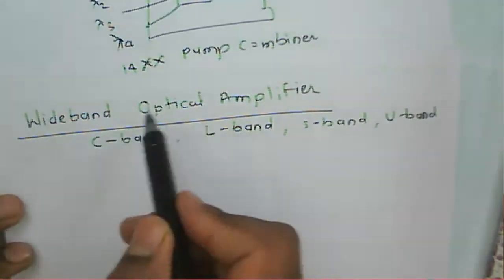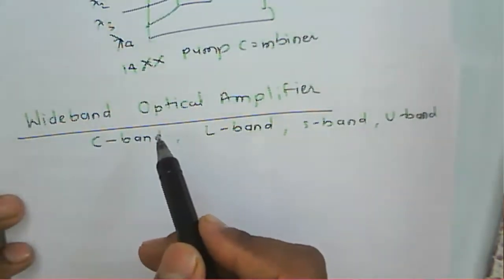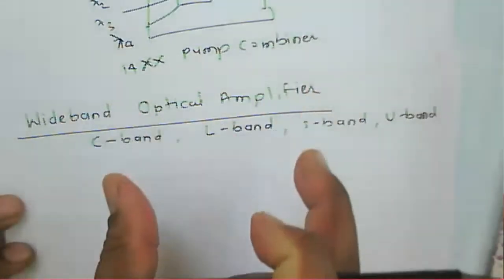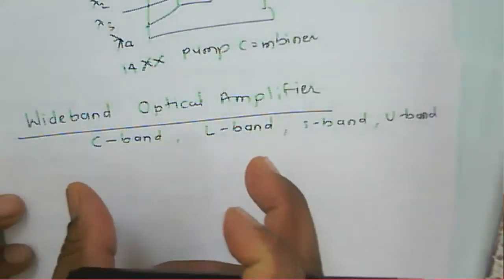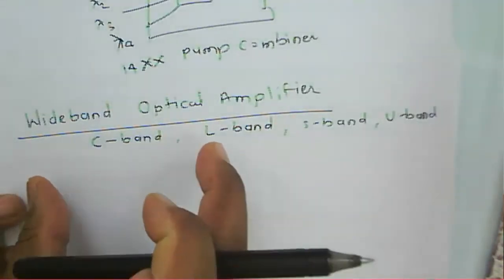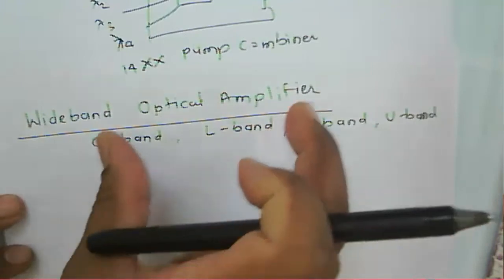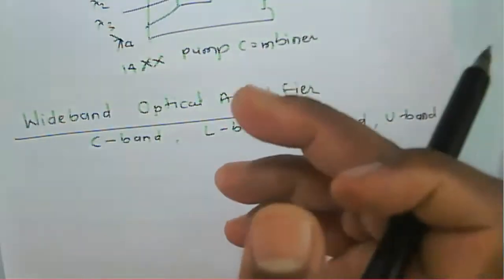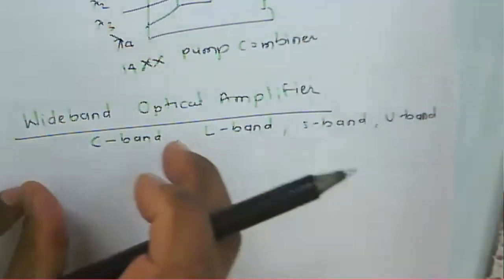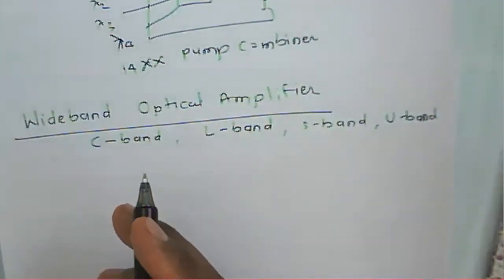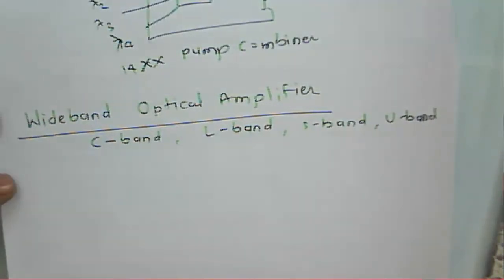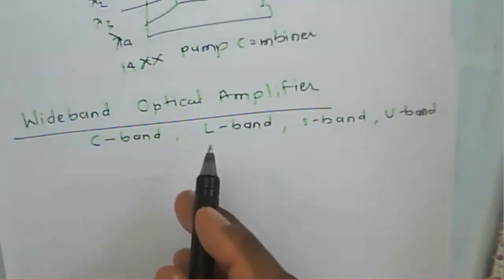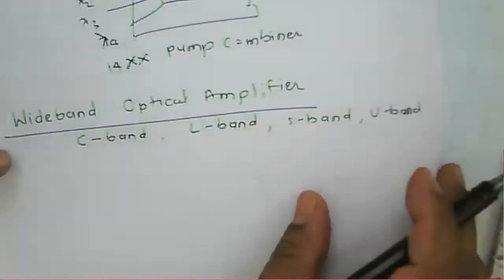Because an individual optical amplifier provides gain for a specific band, when we combine two different bands together, these two bands will work for different wavelengths. That's why it is called a wideband optical amplifier.